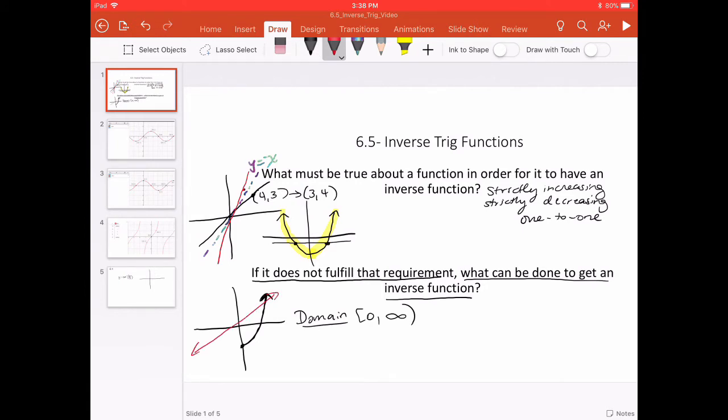Taking some points and reflecting them over the line y equals x. Connecting the dots, I get this smooth curve. It looks like a square root function, which would make sense for the inverse of an x squared.